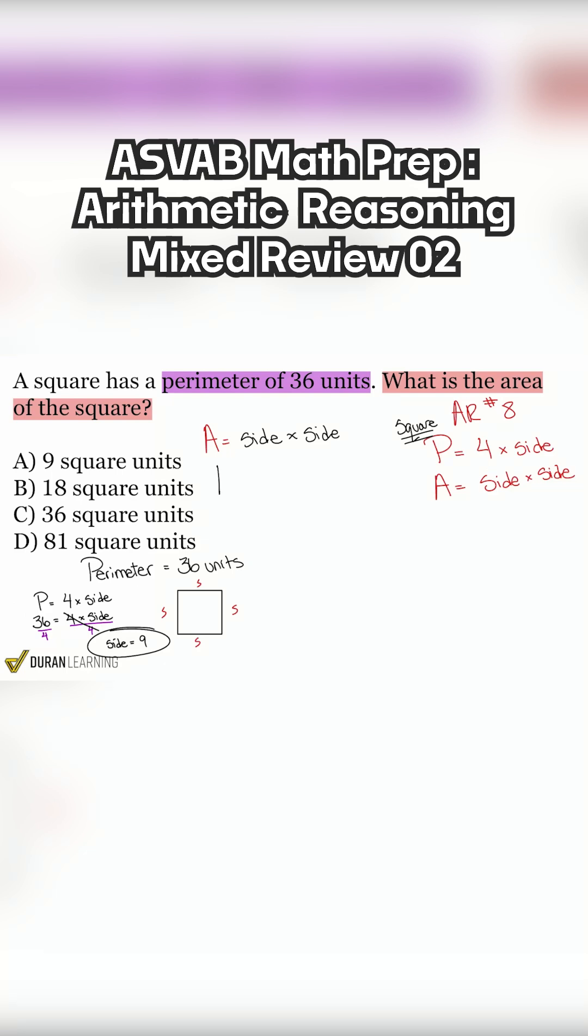Now that we have the side, we can find the area nine times nine, and that's going to be 81 square units.